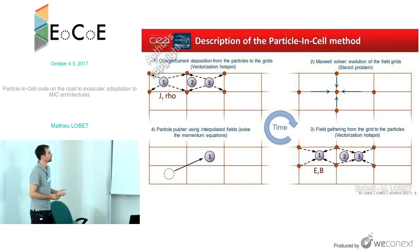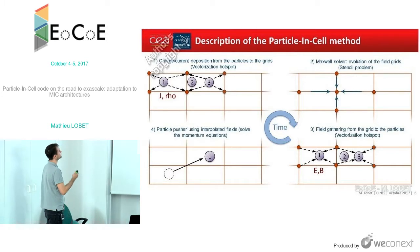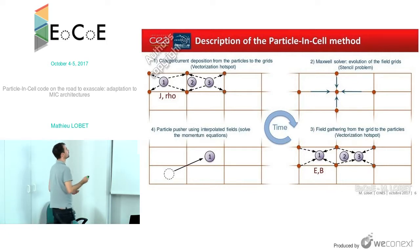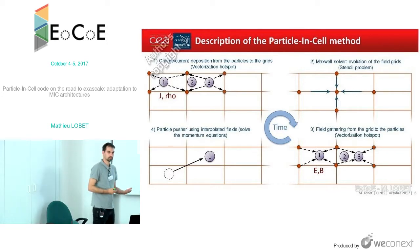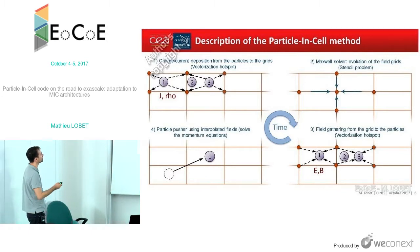Here is the typical particle-in-cell method. Usually we divide it into four parts. The first is what we call the deposition step. During this step, the particles that carry a current or a charge will deposit the information on the nearby grid nodes. Then we compute the Maxwell equations to calculate the fields induced by the particles, by the movement of the particles and their positions. We use the current or charge deposited on the grid to compute the Maxwell equations.